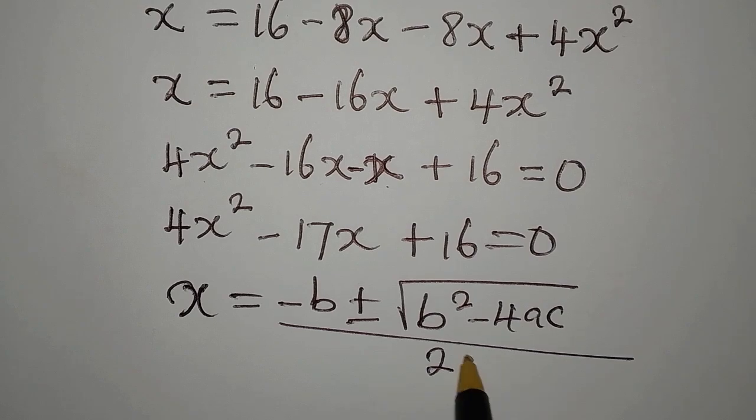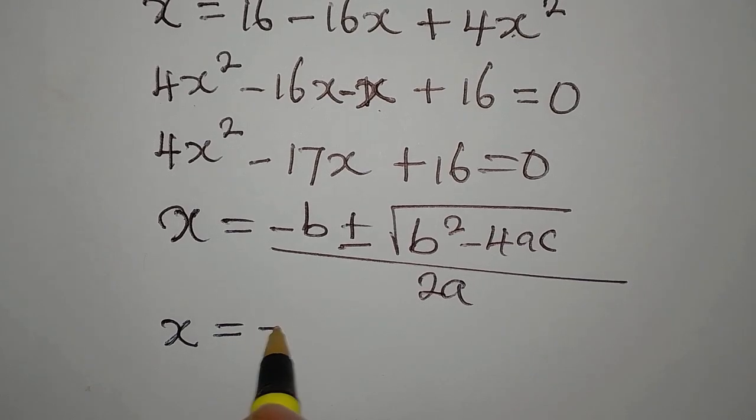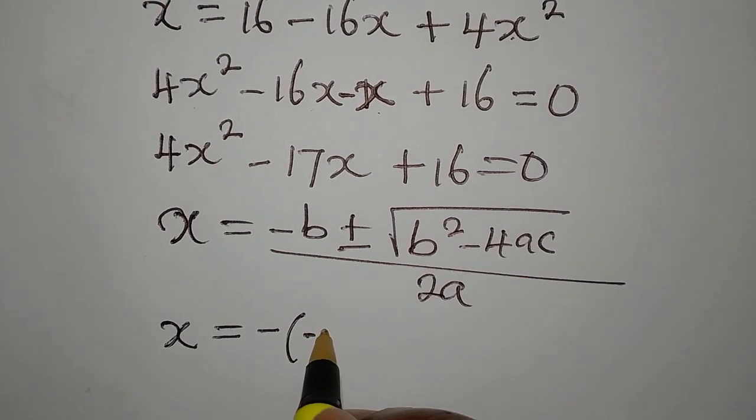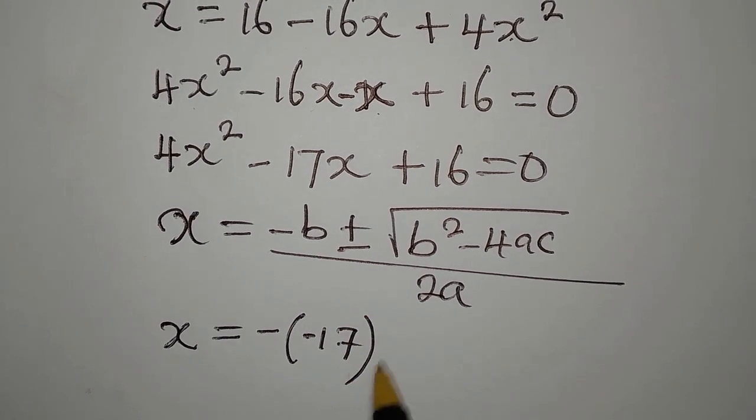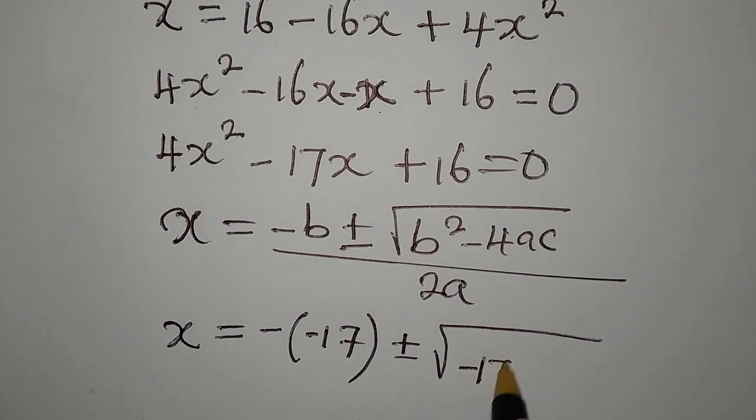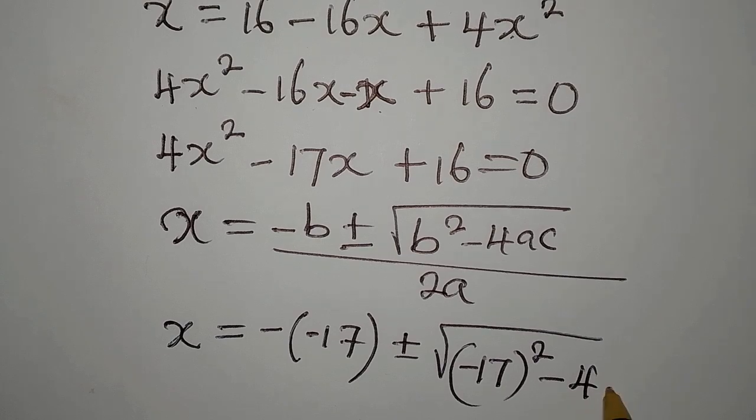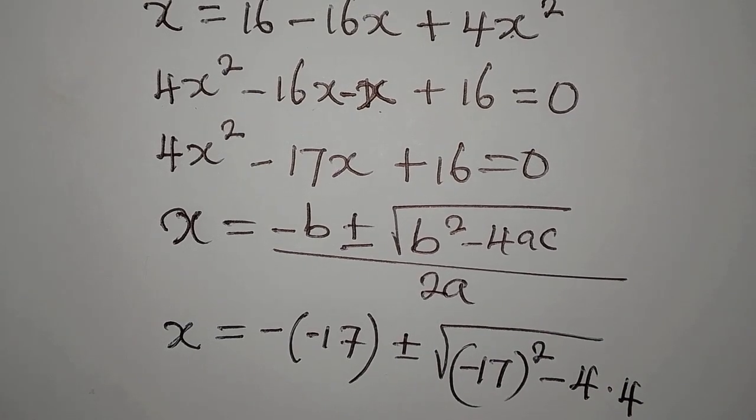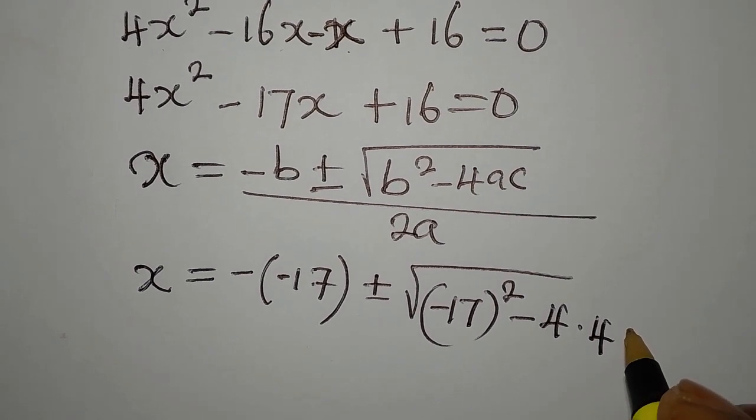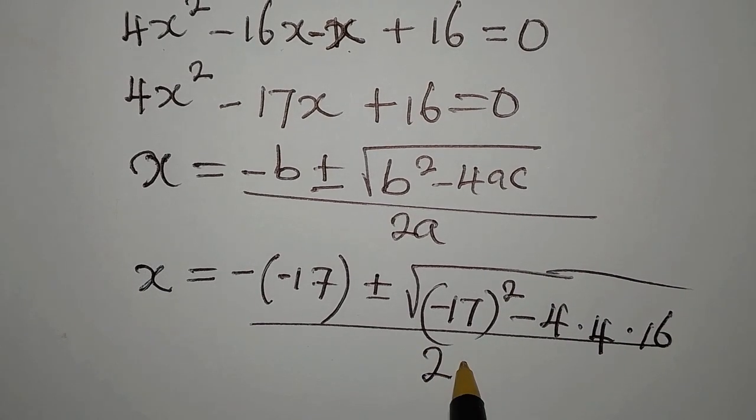Now x from here equals, in place of minus b we're going to have minus minus 17, because b is minus 17, plus or minus the square root of minus 17 squared, then minus 4 times 4 times 16, all of this divided by 2 times 4.